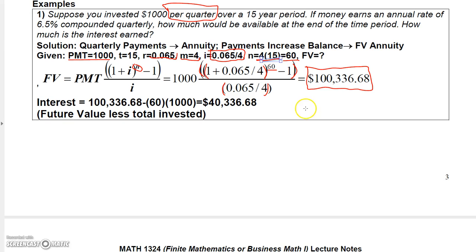Make sure you can get that on your calculator. As far as the interest is concerned, you simply take the $100,336.68 and subtract your total investment, which is 60 investments of $1,000 — that's $60,000. So subtract $60,000 and you get your interest: $40,336.68.